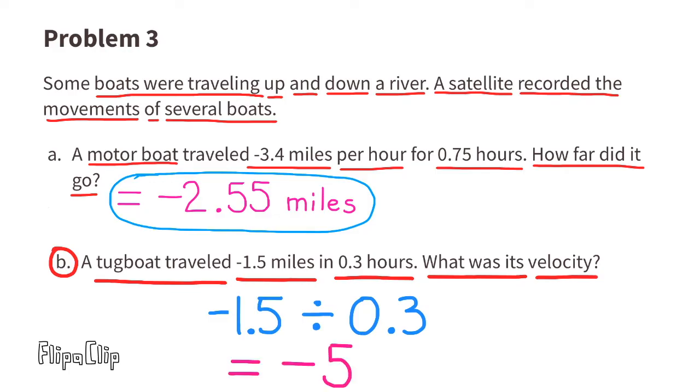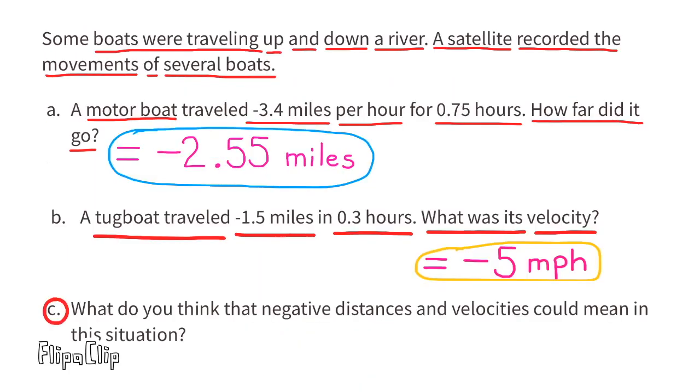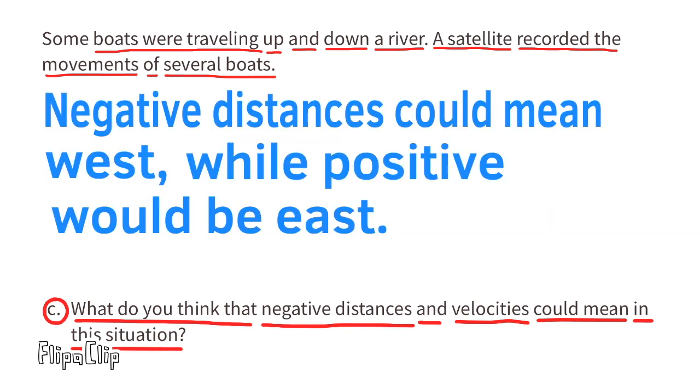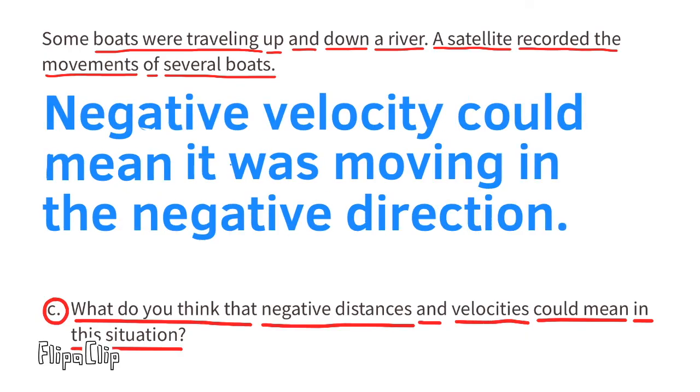Part c: What do you think that negative distances and velocities could mean in this situation? Negative distances could mean west, while positive would be east. Negative velocity could mean it was moving in the negative direction, or negative velocity could mean the speed it is moving in the negative direction.